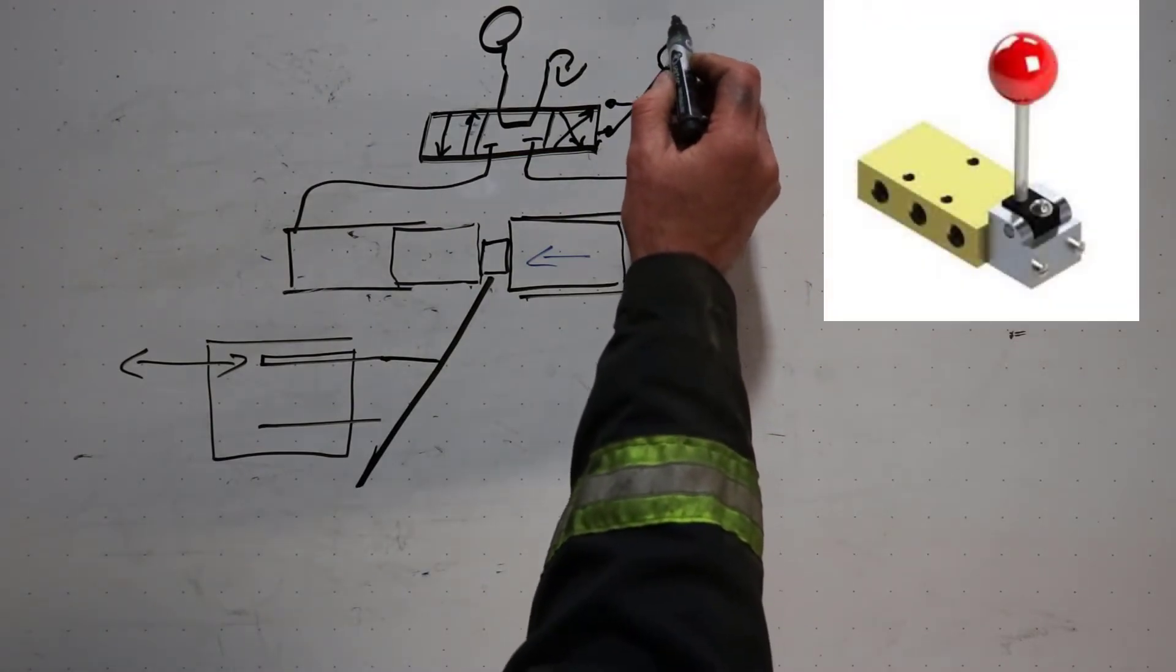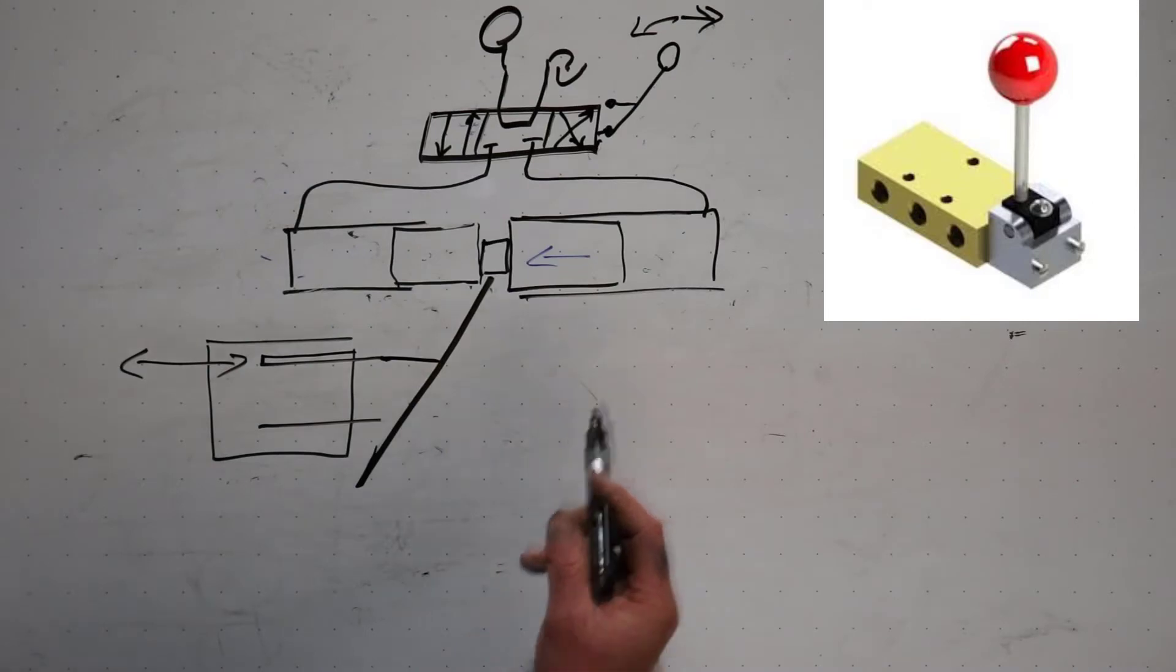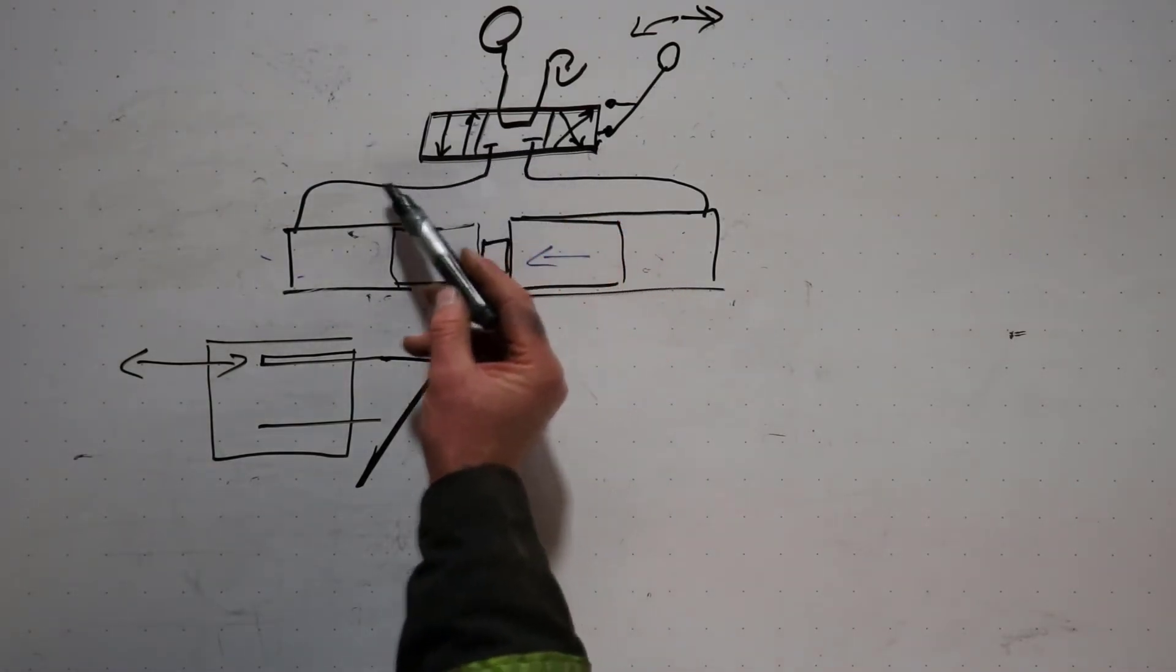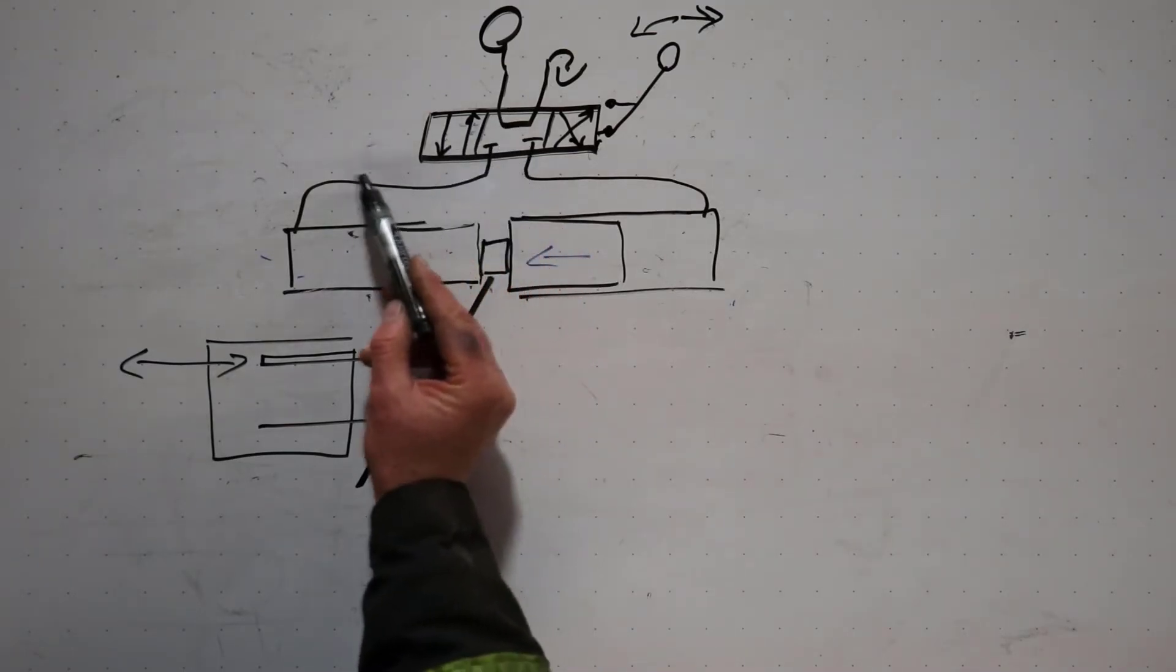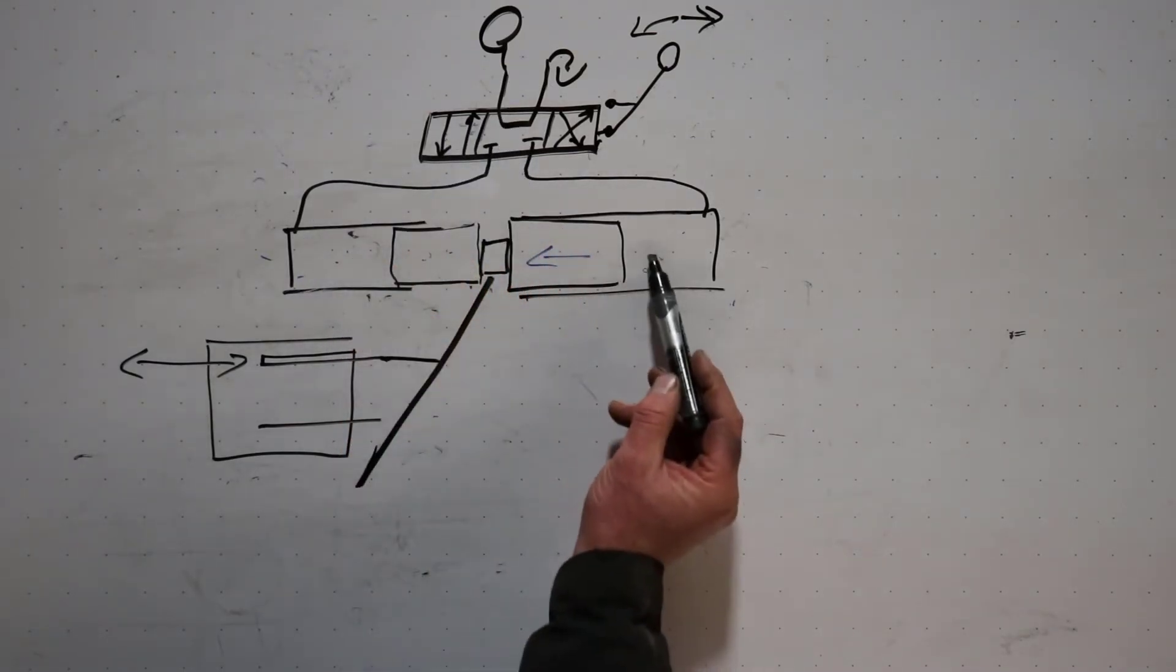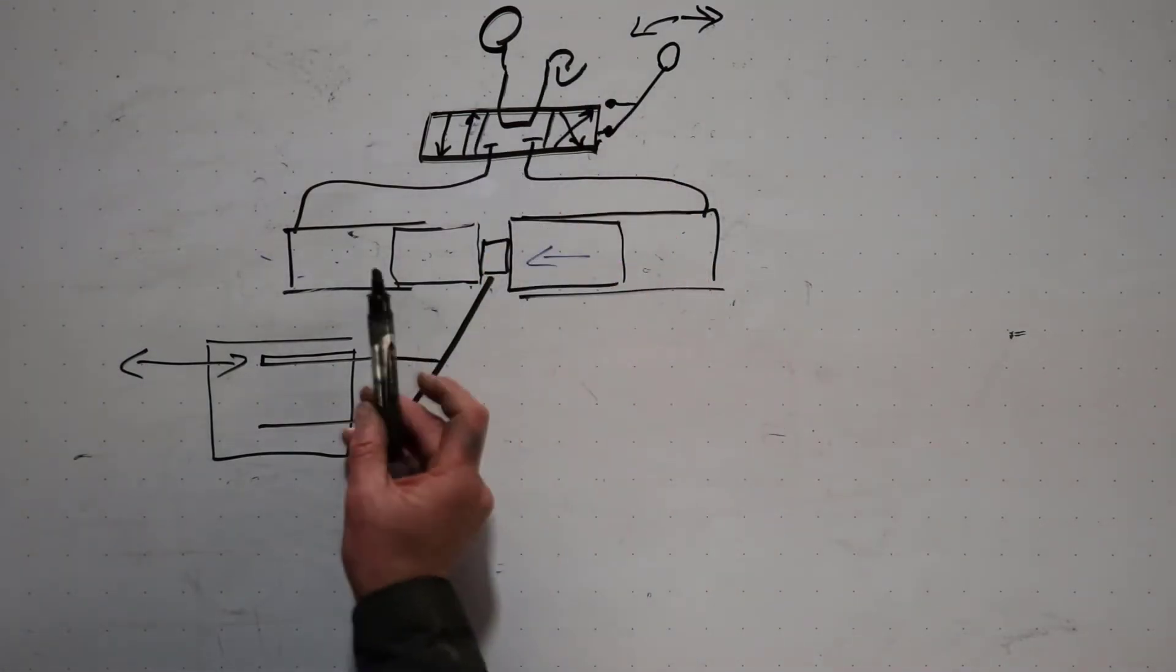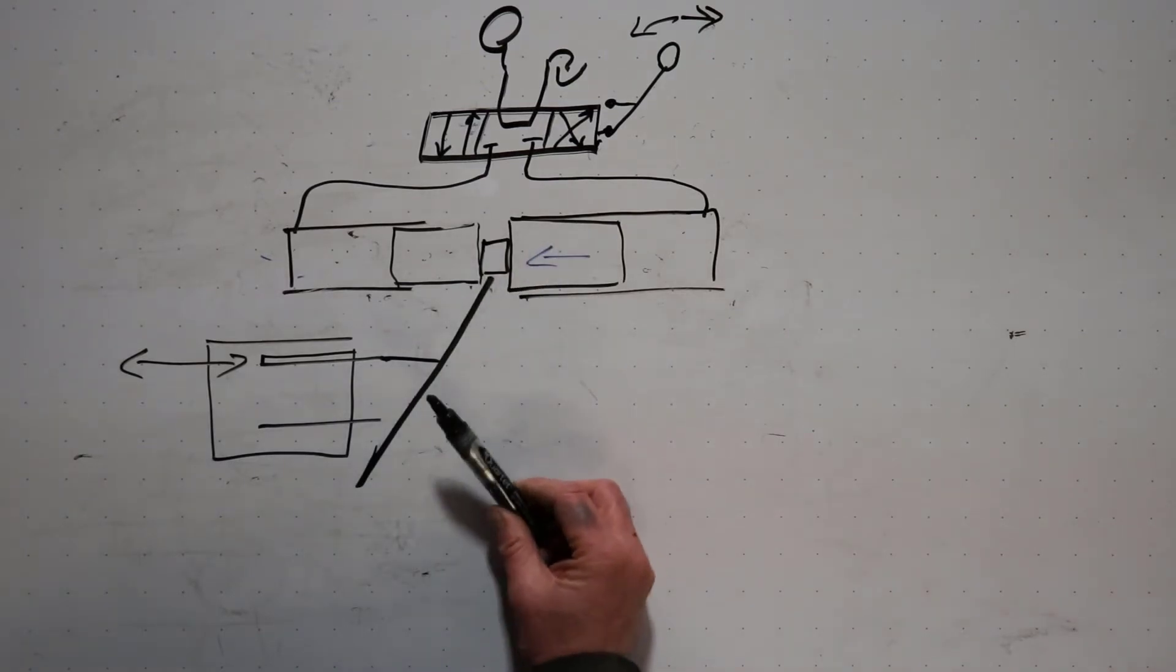So now when I move this lever forwards and backwards, I can open and close the control valve and send oil into this side. If I put this envelope here in line, the oil's gonna flow through, flow into here. This side is hooked to tank, it goes through there, and the cylinder will move to the right, moving the pump to maximum displacement.